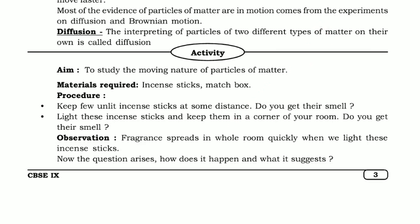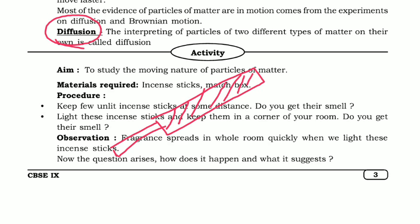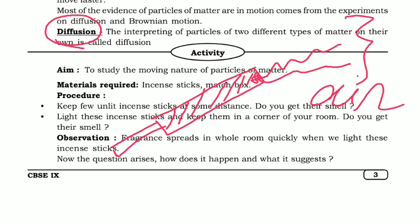Diffusion is a process and one of the properties of matter, in which the intermixing of particles of two different types of matter on their own is known as diffusion. In the case of the incense stick, the concentration of matter in the Agarbatti is very intense, while in the air it is lower. When the particles of the Agarbatti mix into the air, this phenomenon is diffusion — and the particles are clearly moving from one point to another.